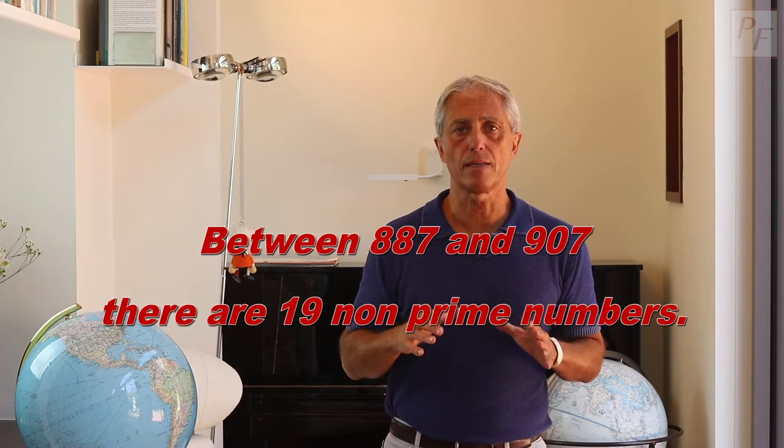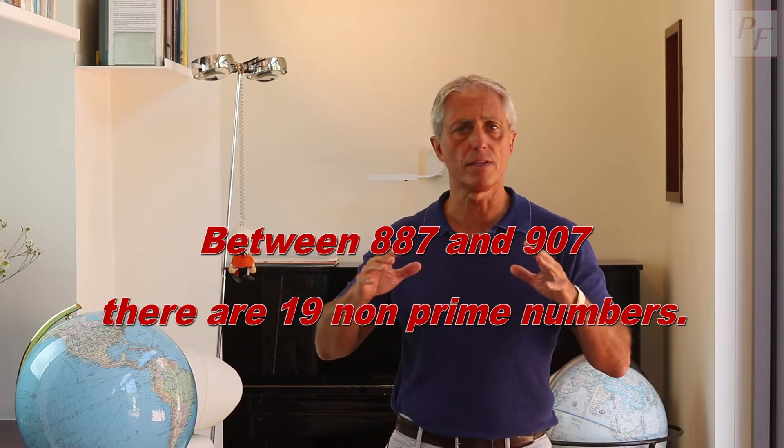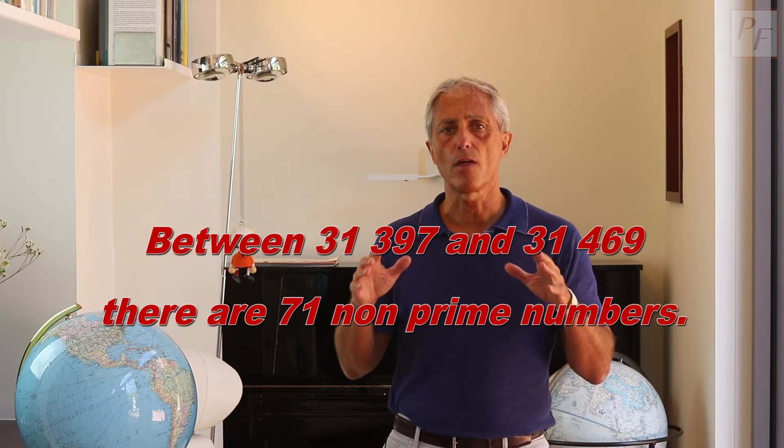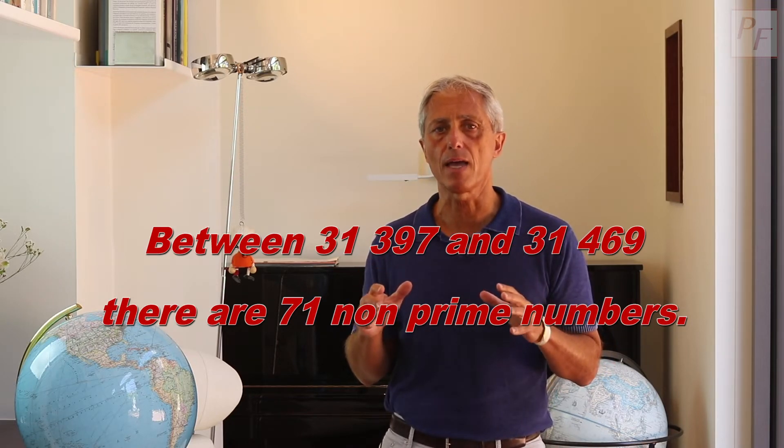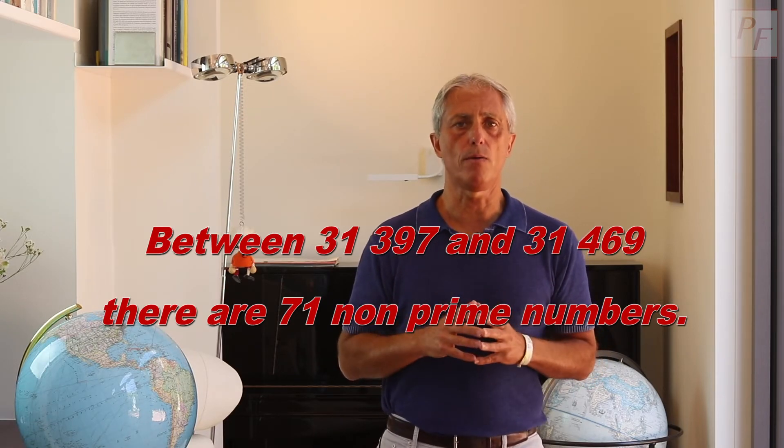Well, this is one way of generating these sequences, but there are also, naturally, authentic deserts of primes, without resorting to this method. Between 887 and 907, there are 19 non-prime numbers. Very naturally, so to find 19 consecutive composite numbers, we do not need to travel up to 20 factorial. Between 31,397 and 31,469, which are still quite small numbers, there are 71 non-prime numbers. Such is the arbitrariness of prime numbers.